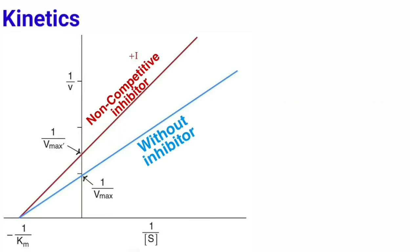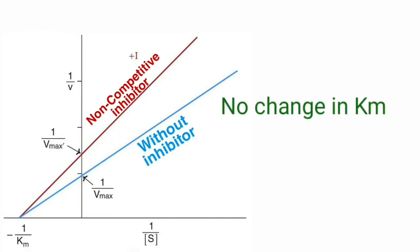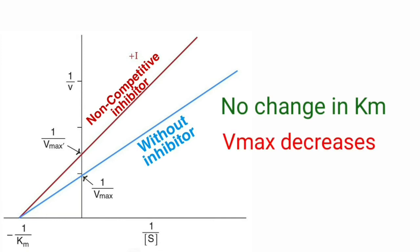How are kinetics affected in the presence of a non-competitive inhibitor? That means, how are KM value and maximum velocity affected? There is no change in KM value, because the inhibitor is not affecting the binding of substrate to the enzyme. So it has no effect on substrate binding, and that's why there is no change in the KM value.